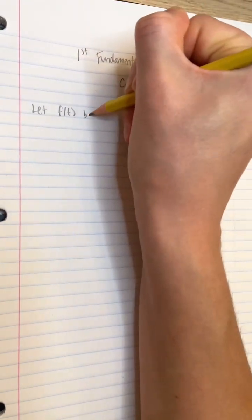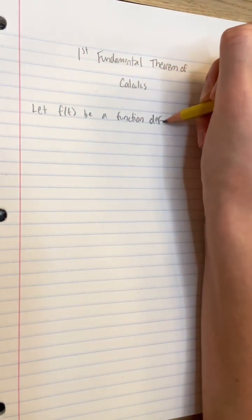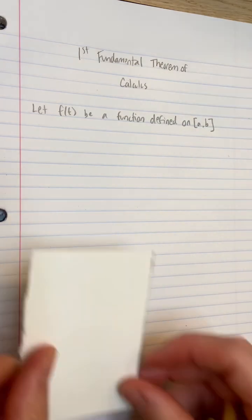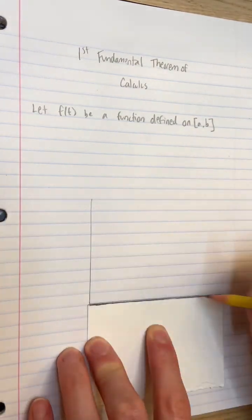Imagine f of t is some continuous function defined on the closed interval a comma b, meaning our variable t can be anything between the numbers a and b, including a and b.